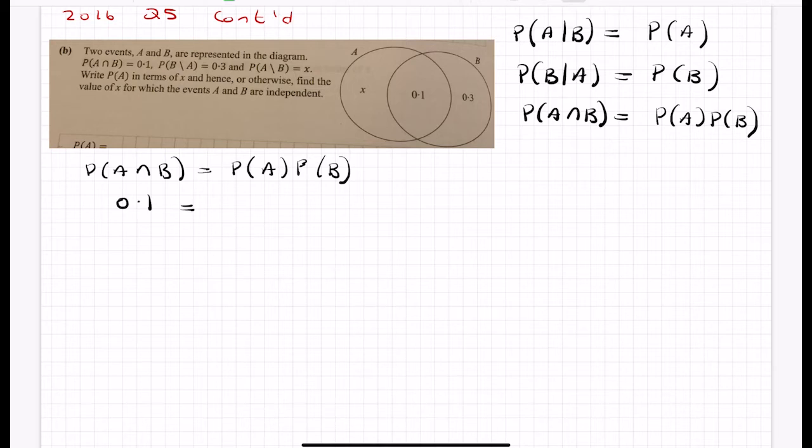So that's 0.1. The probability of A - you need to be careful with this because that is the probability of A, it's that entire circle that I've just drawn there in green. So the probability of A is X plus 0.1. In the same way, the probability of B is that full circle there, which is equal to 0.3 plus 0.1 to be equal to 0.4.